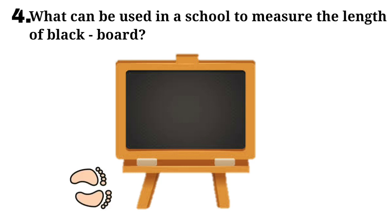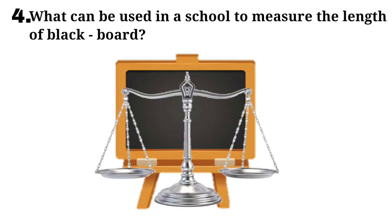Next, option B is feet. Students, with feet we cannot measure length of a blackboard. Option C is watch. Students, with watch we know about time. We cannot measure length of a blackboard with watch. And now, let's talk about option D, balance. Students, with balance we measure the weight of an object, not the length.